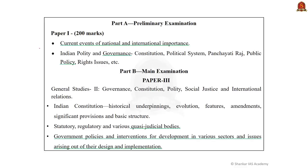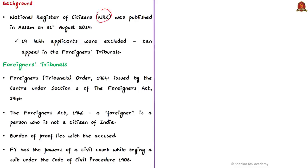The relevant syllabus is given here for your reference. The NRC was published in Assam on 31st August 2019. Out of more than 3.2 crore applicants, 19 lakh people were excluded from the final NRC. An individual whose name is missing in the final NRC can represent their case to the appellate authority. This appellate authority is the foreigners tribunals.